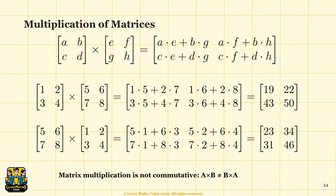One thing to note from this exercise: even though we have the two same matrices [1,2,3,4] and [5,6,7,8], the order of multiplication matters. Multiplying [1,2,3,4] by [5,6,7,8] gives a different answer than multiplying [5,6,7,8] by [1,2,3,4]. This again demonstrates that matrix multiplication is not commutative.